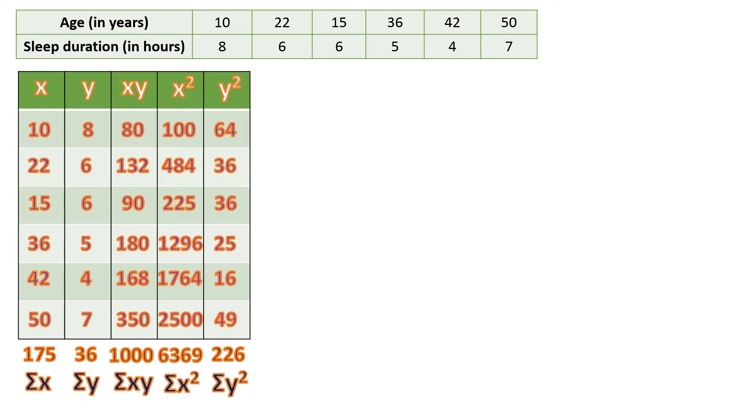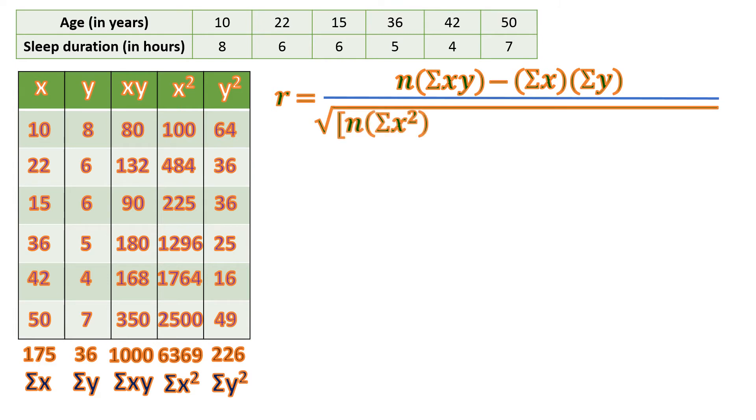After this, we're going now to use the formula for Pearson's R. We're going to denote it with R. R equals N times sum of XY. N stands for the number of participants. In this case, there are 6, so N stands for the number of rows.